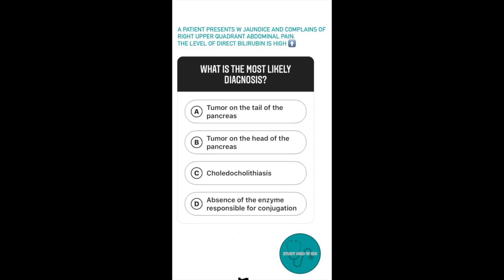Option A. Tumor on the tail of the pancreas. Option B. Tumor on the head of the pancreas. Option C. Choledocholithiasis. Option D. Absence of the enzyme responsible for conjugation of bilirubin.